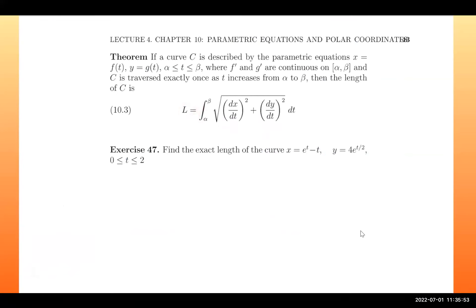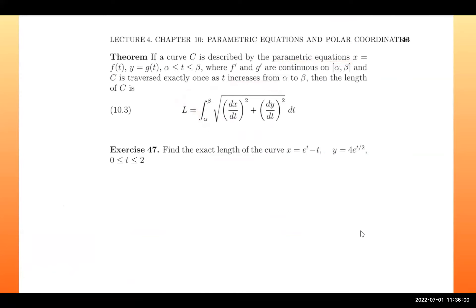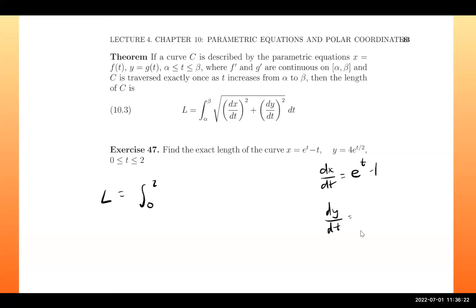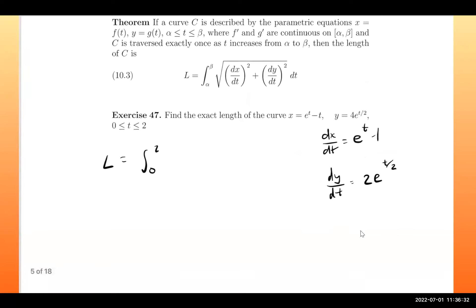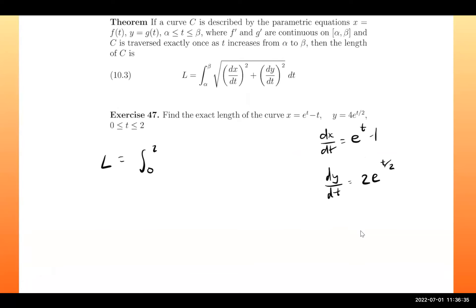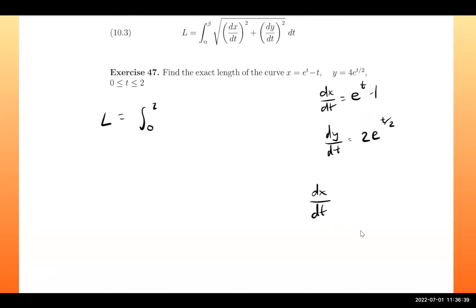The next example uses the arc length formula for parametric equations. They give us two parametric equations and the domain for t. The integral runs from 0 to 2. We find dx/dt = e^t − 1 and dy/dt = 2e^(t/2).